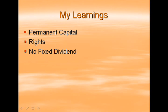Every equity shareholder has a right to receive a share in profits of the company, called dividend. However, this dividend is not paid at a fixed rate. The dividend paid to equity shareholders depends upon the profit of the company. If the company makes good profit, equity shareholders get good dividends. However, if the company doesn't make any profit or makes very less profit, equity shareholders may not even get a dividend. Thus, the dividend amount and returns are very fluctuating in nature.